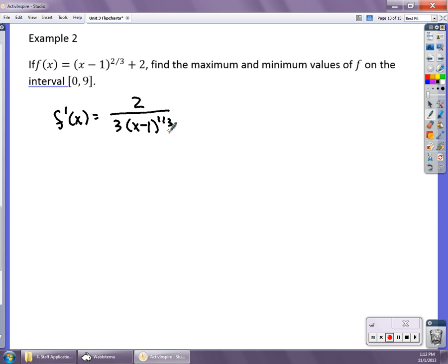And notice that the numerator can never be 0, so the derivative can never be 0. But the denominator can be 0, and that's where the derivative would be undefined. So you do still have a critical number at x = 1, because that's what will make the denominator 0.